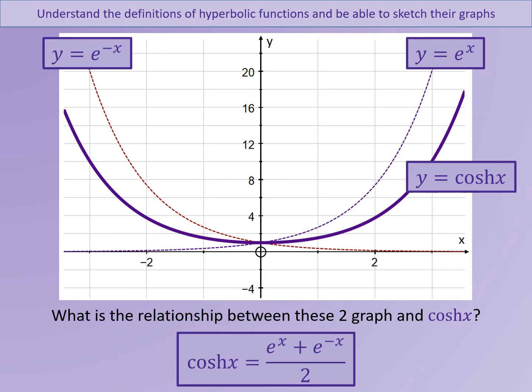This is because cosh x can be expressed using exponential functions in this way: cosh x equals e to the x plus e to the minus x, all over 2. This can be particularly helpful later on when we come to prove identities or solve equations.